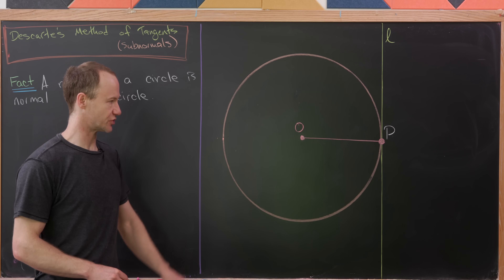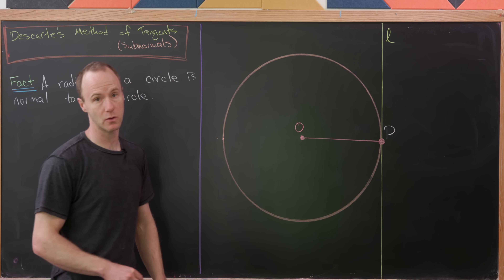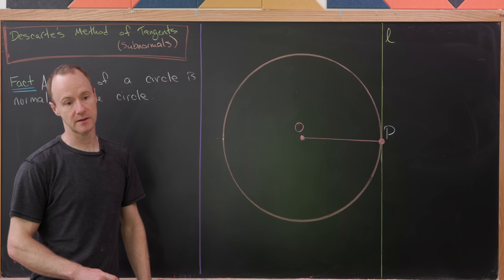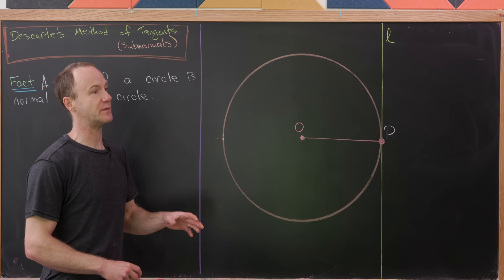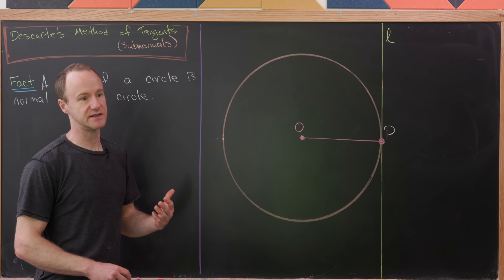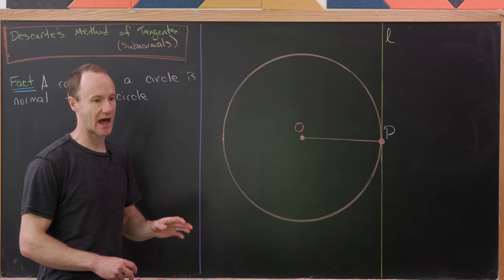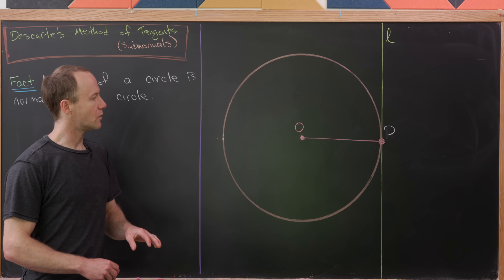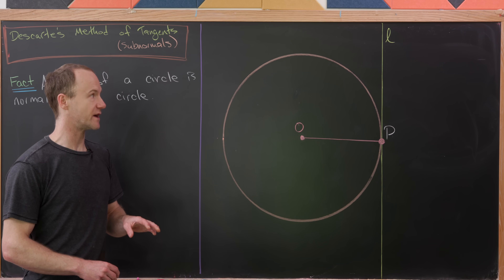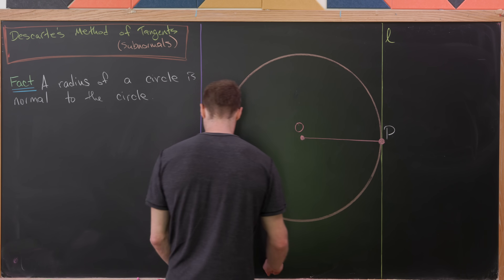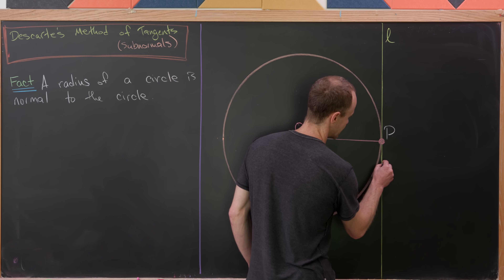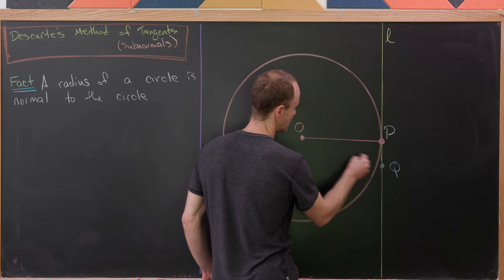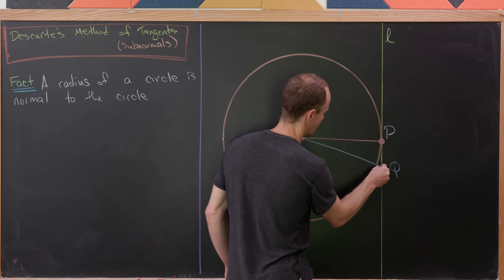I've got a picture of that situation over here. I've got this circle with center O, and then a tangent line to the circle, L, and then a radius OP. A radius would be normal to the circle if and only if it is perpendicular to the tangent line at that point. We're going to start by picking another point along that line, Q, so that the line segment OQ intersects the line L at a right angle.